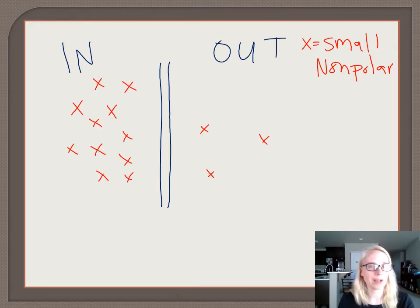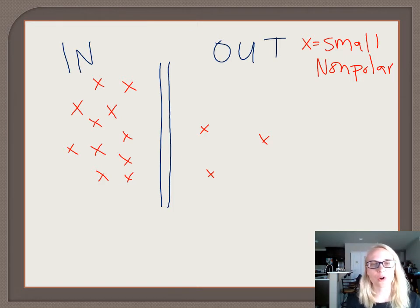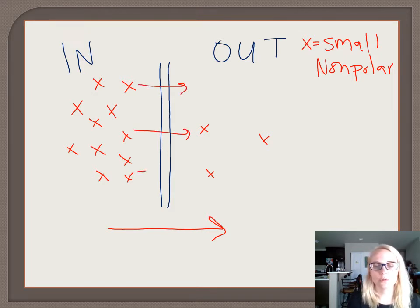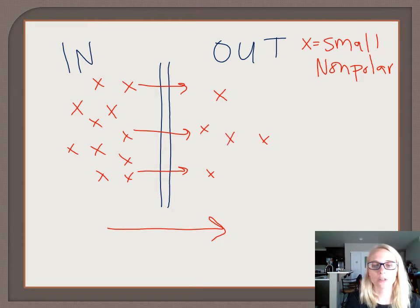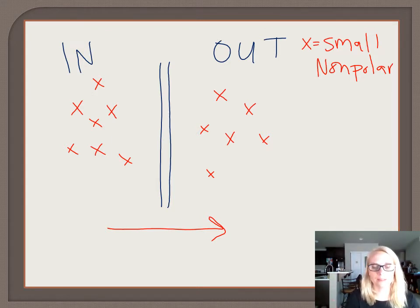In passive transport — passive meaning no energy required — molecules move from an area of high concentration to low concentration. So we should see these X molecules want to move from inside to outside. This is passive transport called simple diffusion. The X molecules will move across the membrane because they're small and nonpolar until we reach equilibrium, with about the same number of molecules on both sides.